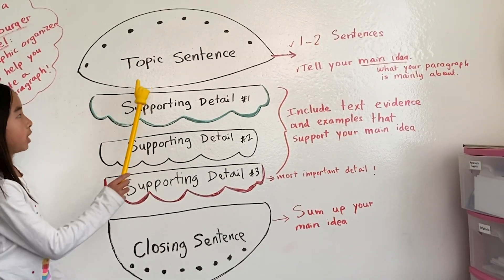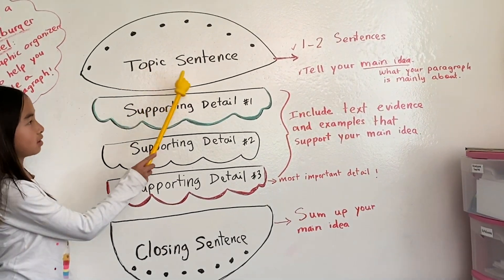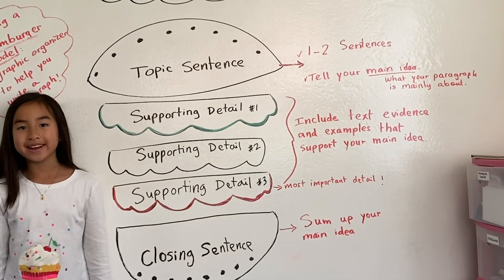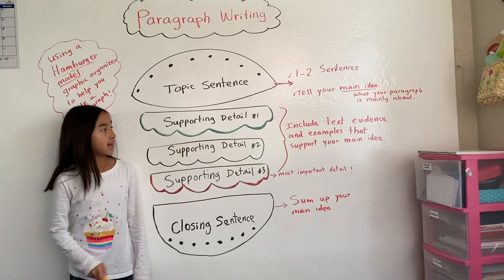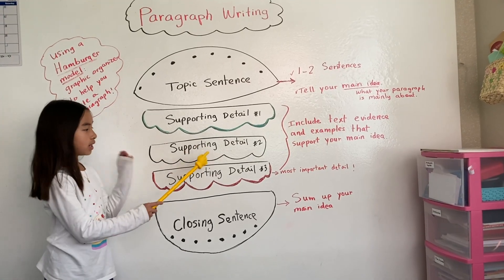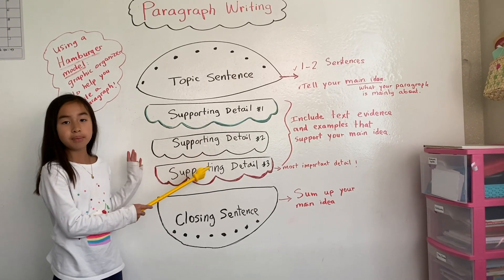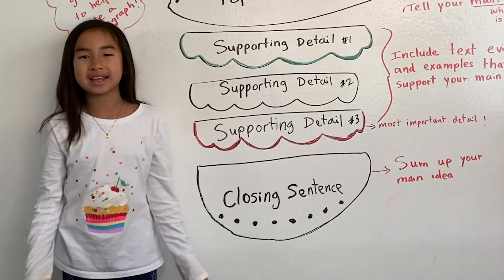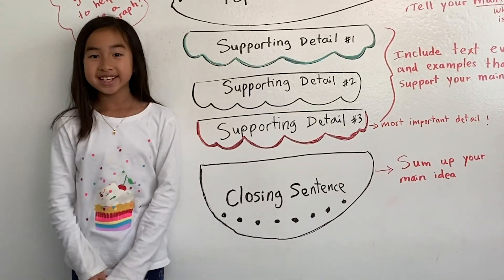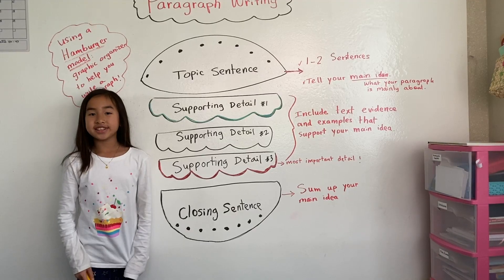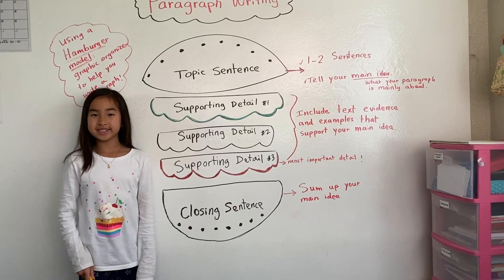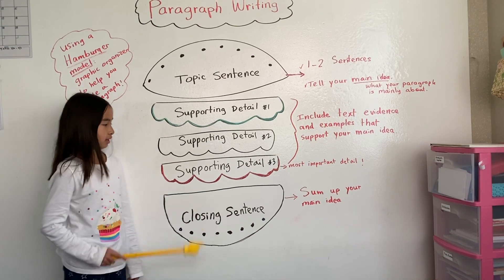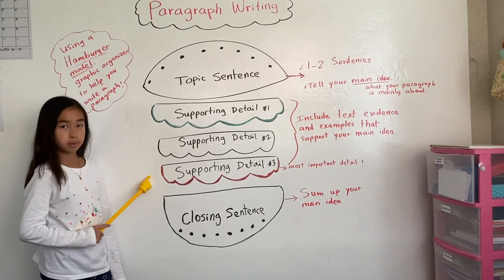The first part of your paragraph is the topic sentence — what tells your main idea. Next is at least three supporting details to make your paragraph sound juicy. Usually, the most important detail in your paragraph is the last one.